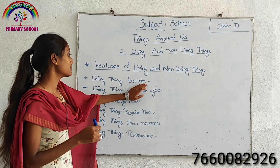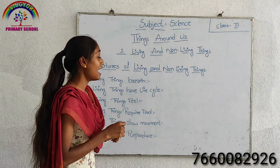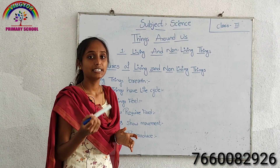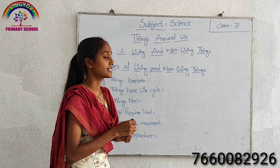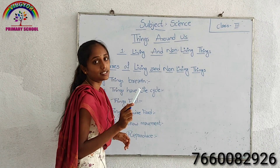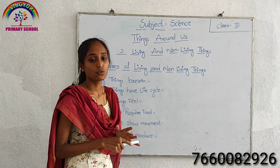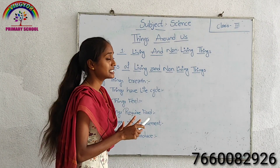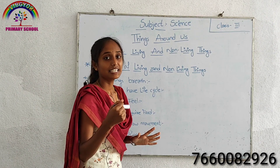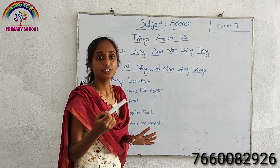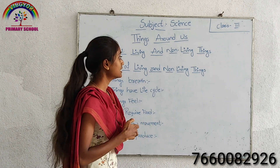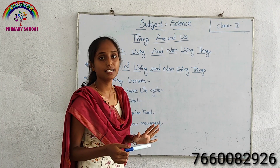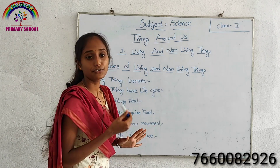First, we discuss about living things breathe. All living things need air or oxygen to breathe in and breathe out carbon dioxide. In this process they use their organs like nose and mouth. Some fishes breathe in oxygen and breathe out carbon dioxide through their gills. Plants breathe in carbon dioxide and release oxygen through the process of photosynthesis.